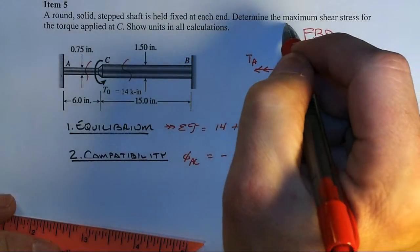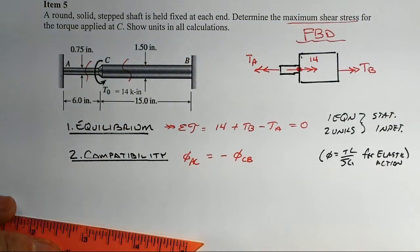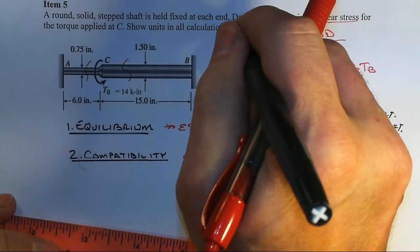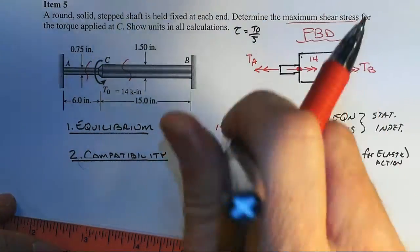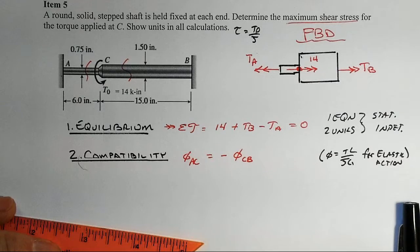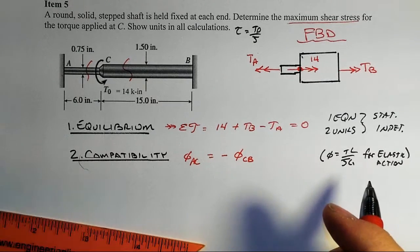Now note, what we were asked to do is find the maximum shear stress for the torque. At some point we're going to be doing tau equals T rho over J to take that internal torque and turn it into a shear stress.